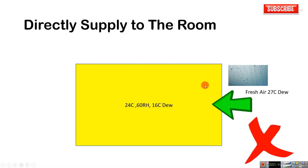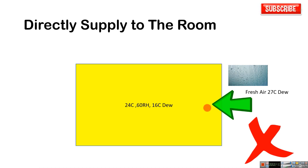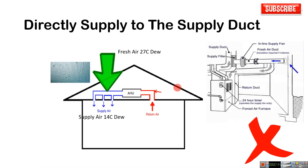You can see the fresh air is directly supplied to the room. The room temperature is 24°C, RH 60%, and dew point 16°C. Our fresh air dew point is 27°C. If we supply our fresh air directly to the room, the area near the fresh air diffuser will condensate. This means the fresh air supply point will definitely cause condensation, so this is a wrong connection type.